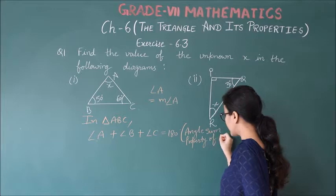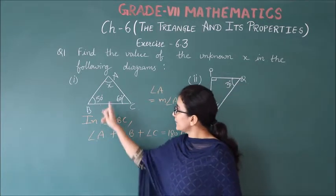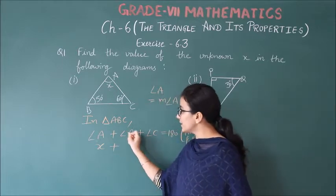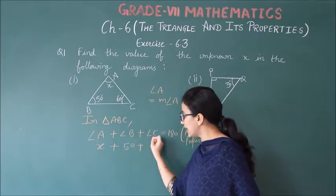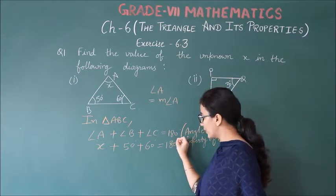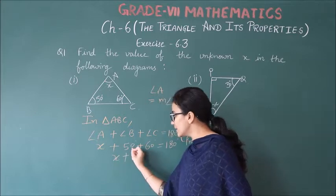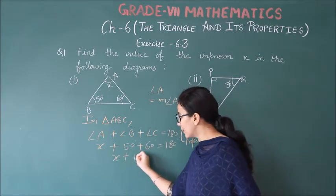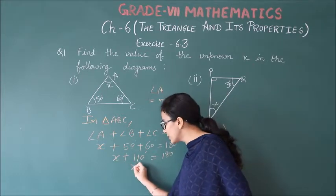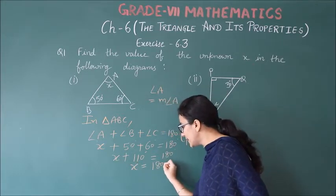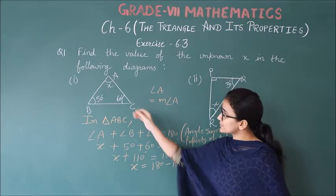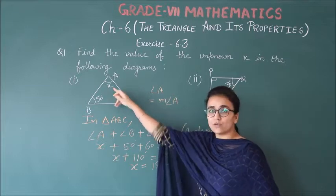Angle A measurement unknown x plus angle B 50 degrees plus angle C 60 degrees is equal to 180. So x plus 50 plus 60 is 110 degrees equals 180 degrees. So x is 180 minus 110 that is 70 degrees.